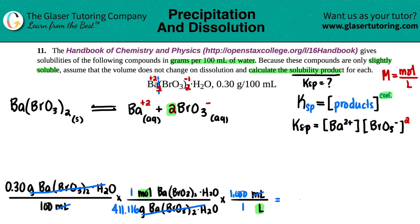And now let's see what we got. So 0.3 divided by 100, divided by 411.116 times 1,000. I get 7.297 times 10 to the negative third. And that's moles per liter of the whole hydrate.